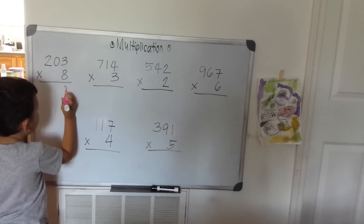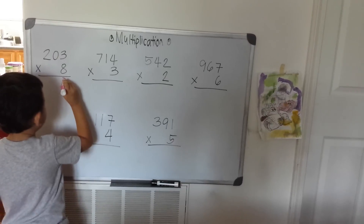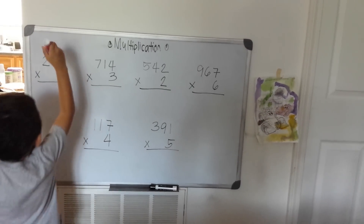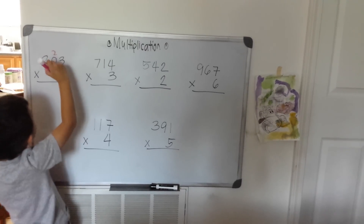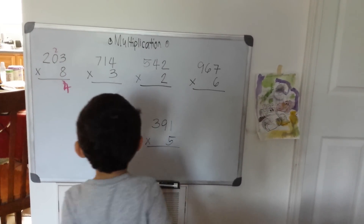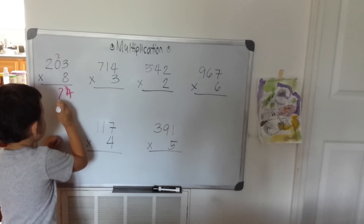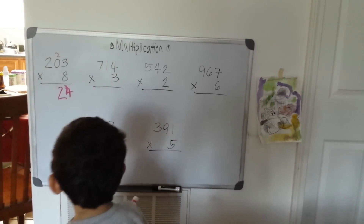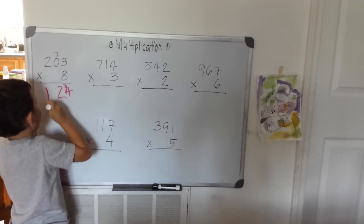Eight, eight. Eight, eight. I'll apply zero. This two is two. Eight, eight. I'll apply two is sixteen.